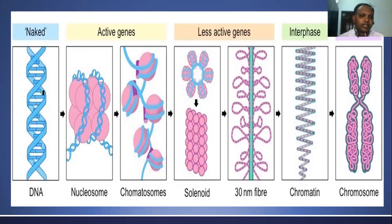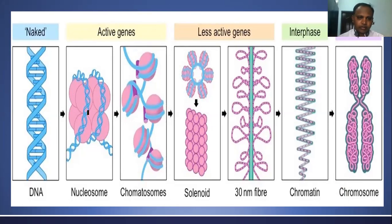Naked DNA associates with histone proteins — totally 9 histone proteins of 5 types: H1, H2A, H2B, H3, and H4. Except H1, the remaining are present in 2 copies each, so totally 8 proteins together form the histone octamer. The DNA wraps around this histone octamer 1 and 3/4 turns — not 2 complete turns — covering about 200 base pairs. This structure is called a nucleosome.